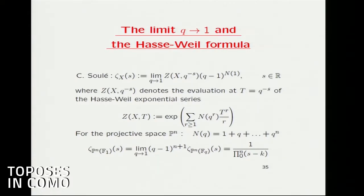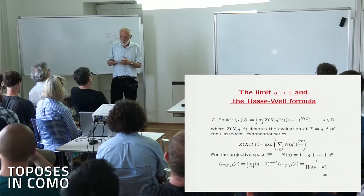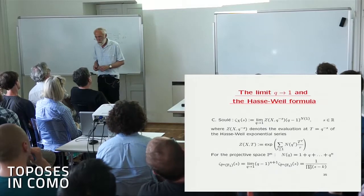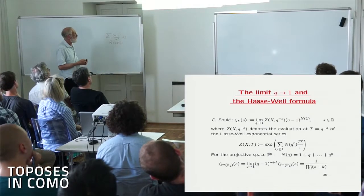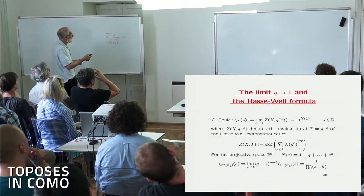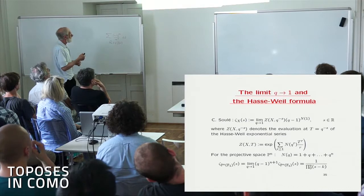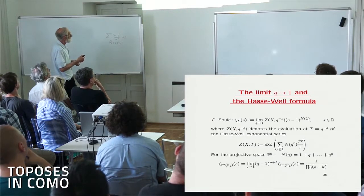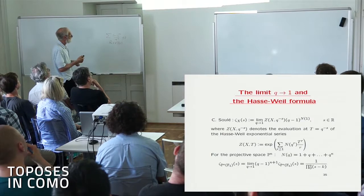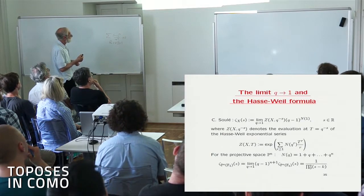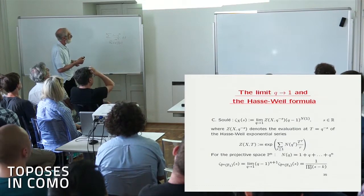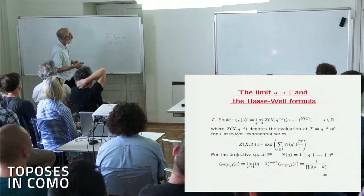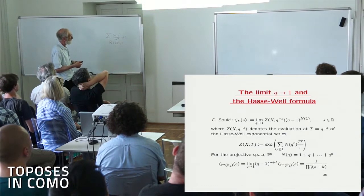It counts the number of points on the curve over the finite extension of the ground field F_q. So you have a generating function that looks like this. Soulé had the idea of generalizing the formula which holds for finite fields in the limit when q goes to 1, and he proposed the definition of a zeta function by taking this limit. He did very simple calculations to show that the zeta function gave the right answer, for instance for projective space, where the counting function over a finite field F_q is given by a universal formula because it is a rational variety.